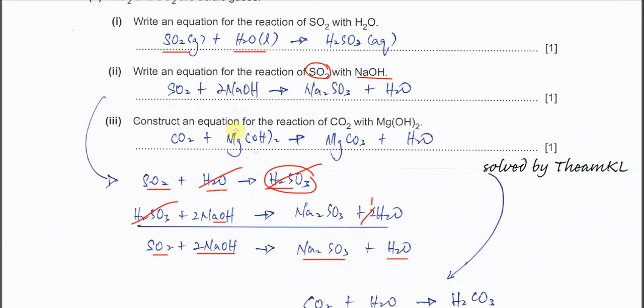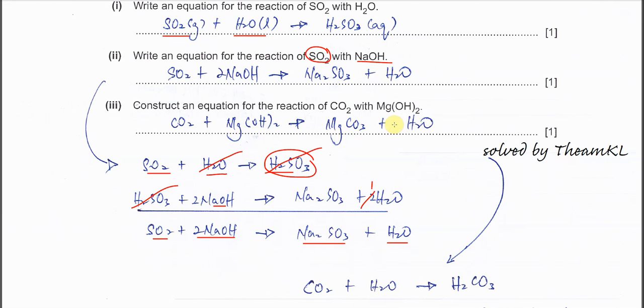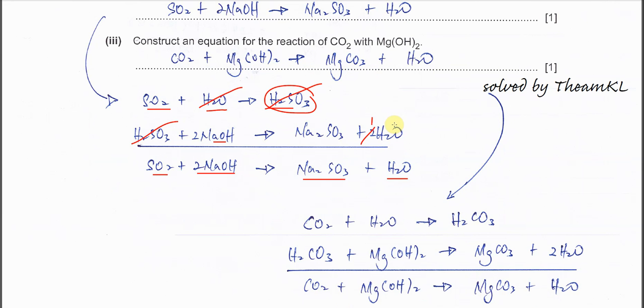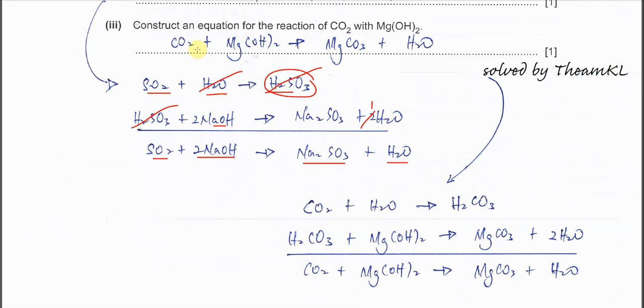Part D(iii): Construct an equation for the reaction of CO2 with magnesium hydroxide. Use a similar method: CO2 first reacts with water to form carbonic acid H2CO3. The H2CO3 produced then reacts with Mg(OH)2 to form magnesium carbonate and water. Then sum up